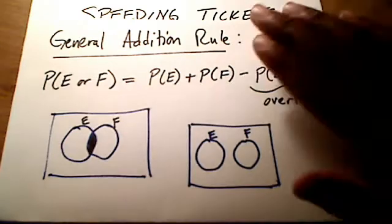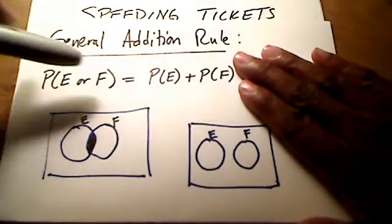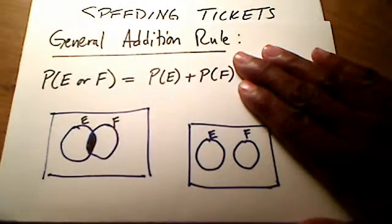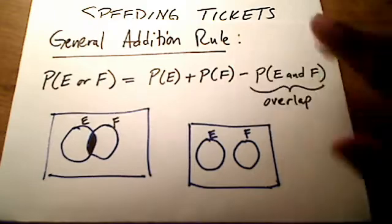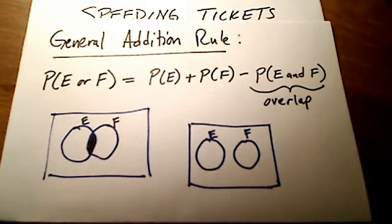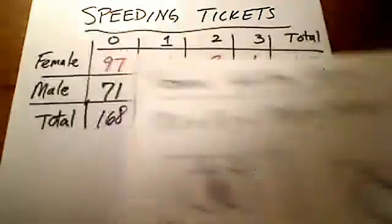And if that last term is zero, we're simply going to add up the probability of E and the probability of F. That's a simplified form of the addition rule, only if there's no overlap at all. That's the general addition rule.